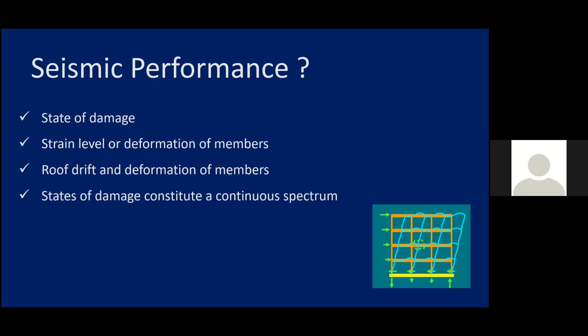Coming to the definition: performance is the state of damage of the building. There are many parameters to define this — strain in members, deformation of members, roof drift, or drift of members. The state of damage is like a continuous spectrum because the parameter can take any value. When an event occurs, initially the building may be undamaged; as intensity increases, you can see slight damage. Even though it is a continuous spectrum, we need to define some particular damage states.